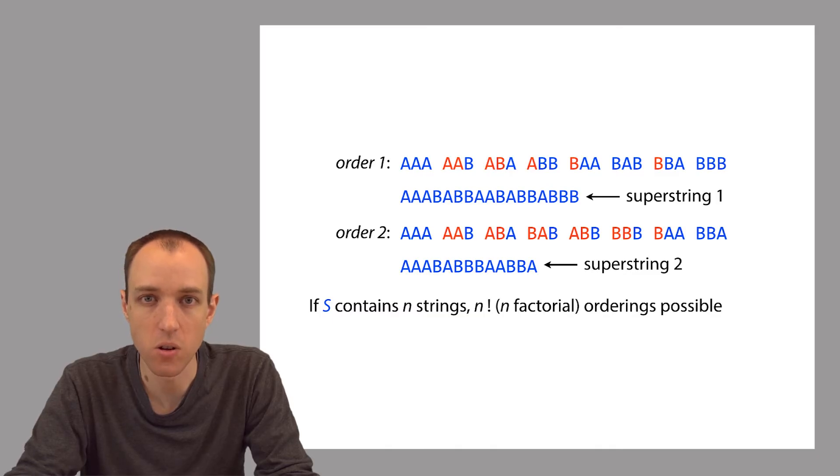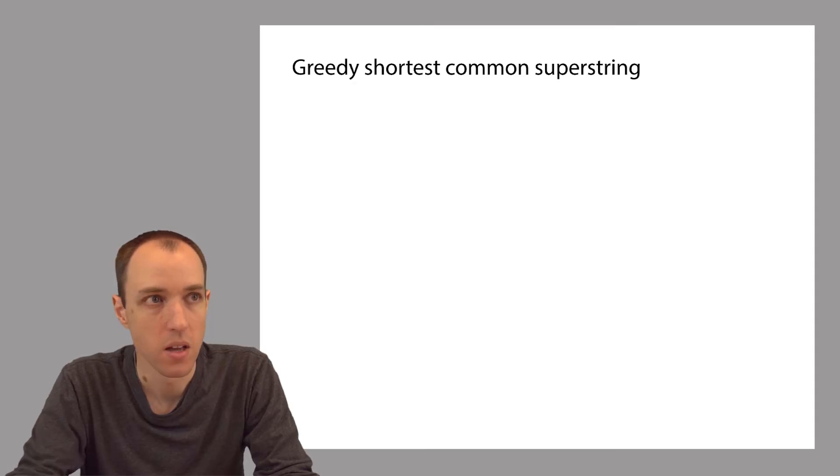In this lecture, we'll see an alternative that's actually much faster. It's called greedy shortest common superstring. We call this algorithm greedy because it will make a series of decisions, and at each decision point, it will choose the option that reduces the length of the eventual superstring the most. This seems like a good strategy. However, as we'll see, making the greedy decision at each point in the algorithm does not necessarily mean that we'll get to an optimal solution.